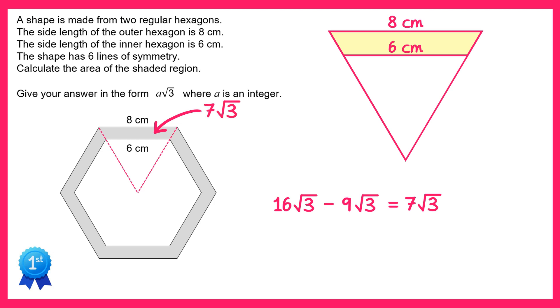To find the total area shaded on the diagram, I just need this area six times. So I do seven root three times by six, which is forty-two root three. And that's your answer to the question.